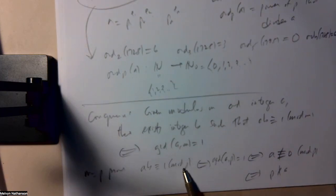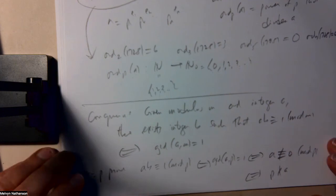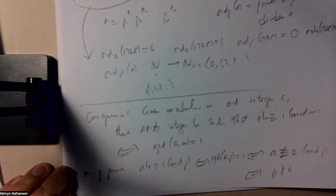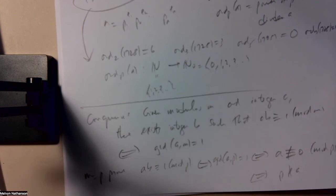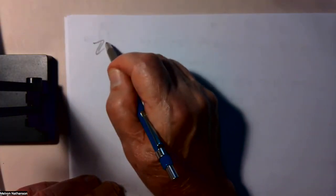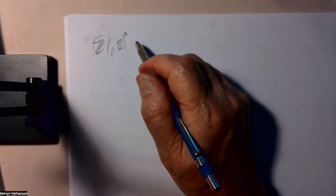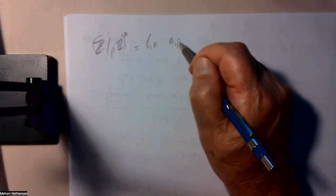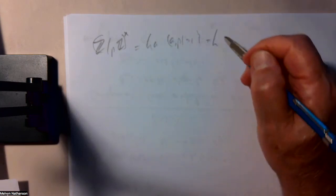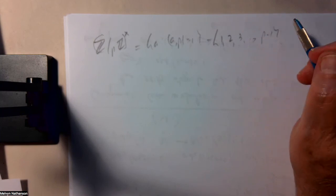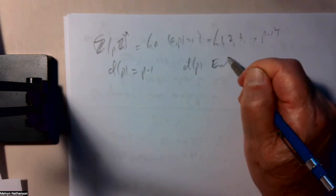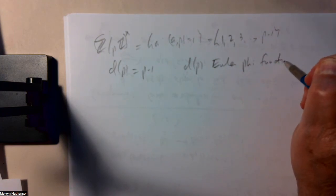So if you take a number a which is relatively prime to p, there's always a b such that ab is congruent to 1 mod p. If we look at Z mod p, Z star, this is the set of all a such that a and p are relatively prime. These are the congruence classes mod p. This is all the integers from 1 to p minus 1. So phi of p is p minus 1, where phi of p is the Euler phi function that we talked about in the last lecture.